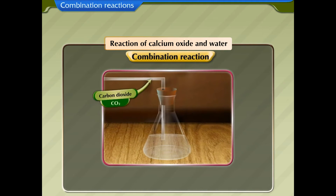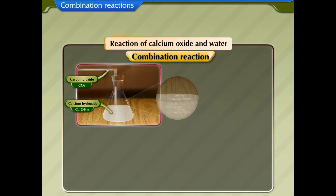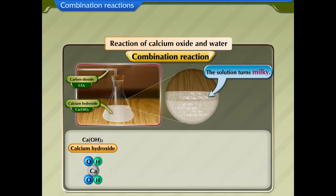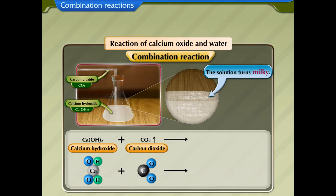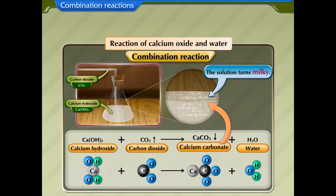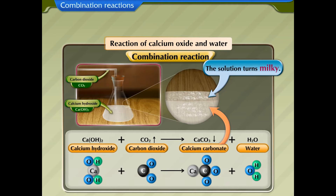Now, allow carbon dioxide gas to react with calcium hydroxide. The solution turns milky. Calcium hydroxide reacts with carbon dioxide to form a white precipitate of calcium carbonate and water. The formation of calcium carbonate makes the calcium hydroxide solution milky.